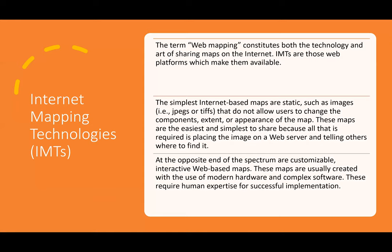Something more along the lines of GIS that we'll do in this class is work with internet mapping technology — something you probably use a lot, like Google Maps. We will actually do some activities in Google Maps when we get to the software portion of the class. The term web mapping constitutes both the technology and the art of sharing maps on the internet. IMTs are those web platforms that make them available. The simplest internet-based maps are static images like JPEGs or TIFFs that you cannot change.